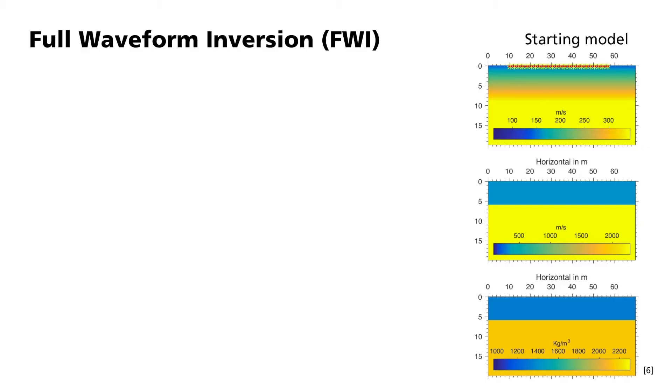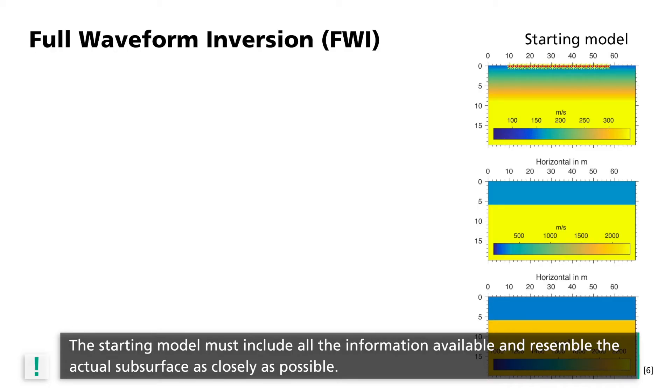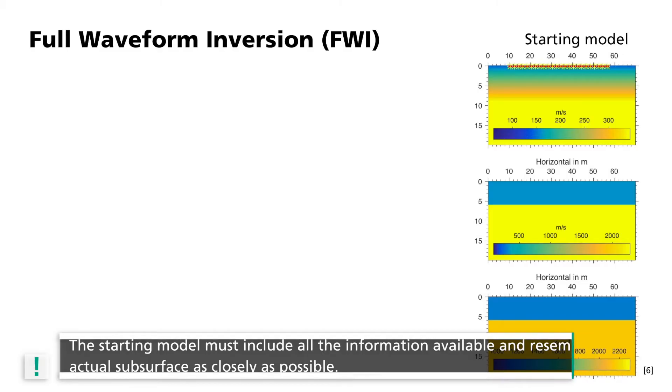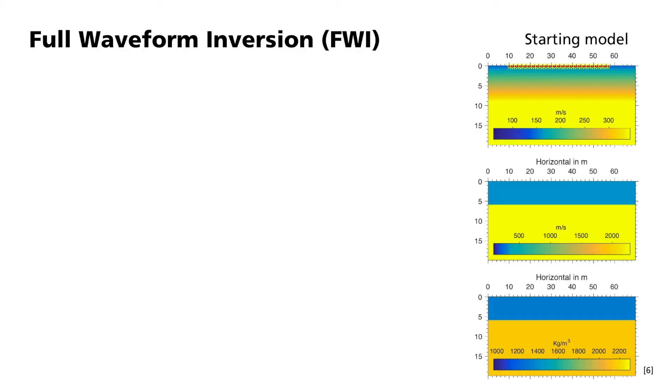But how does that work? The objective of inversion in geophysics is always to deduce the material properties of the subsurface from the observed measurement data. Several different methods can be used to seek out a subsurface model that can satisfactorily explain the measured data. One approach is to try out as many models as possible and to see which one is best. This approach requires a great deal of computational power and time because each randomly selected model needs to be calculated individually. A more efficient way is to systematically refine an existing starting model of the subsurface. In this approach, the starting model must include all the information available and resemble the actual subsurface as closely as possible. This will ensure at the end that a realistic subsurface model can be calculated.